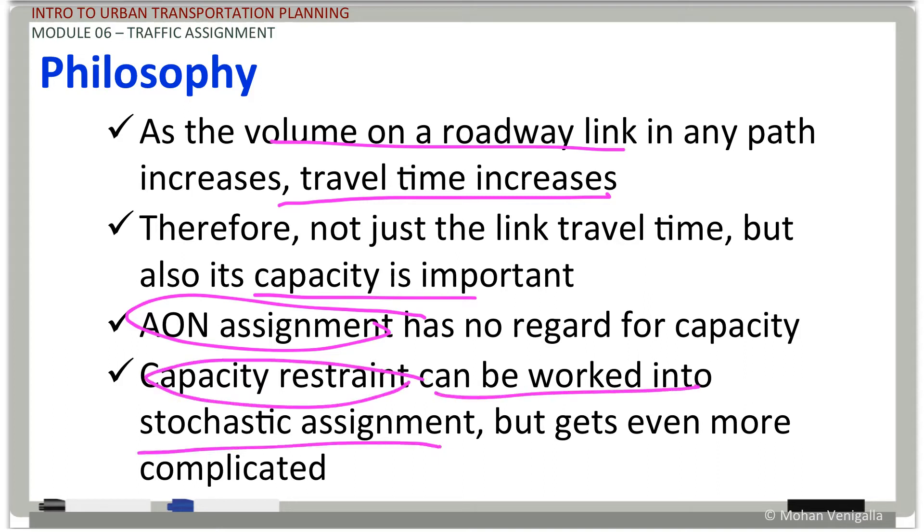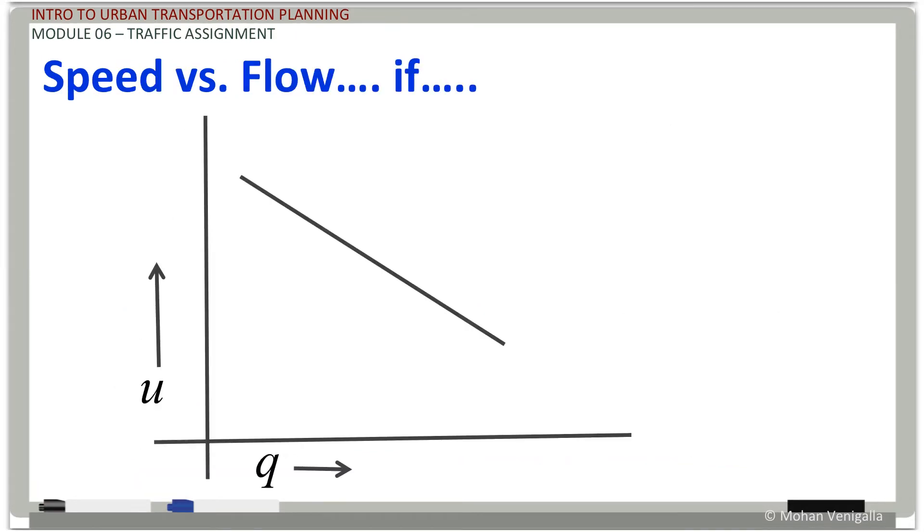Capacity restraint can be worked into stochastic assignment, which we just talked about in video number four of traffic assignment of module six. But it gets already complicated, and it gets even more complicated when you include capacity restraint.